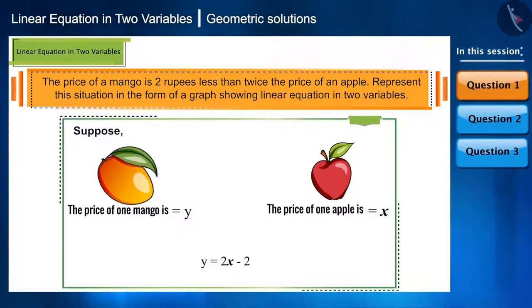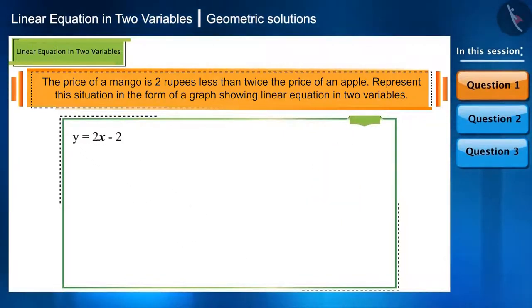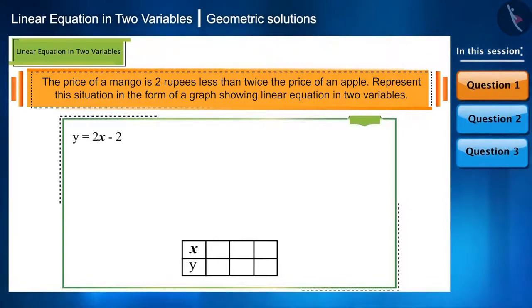Now, we have to make a graph by marking their coordinates on x and y axis. How will you do this? We will make a table of x and y and find different values for x and y. If you replace x with 1 in this equation, y will become 0. If you replace x with 2, y becomes 2.